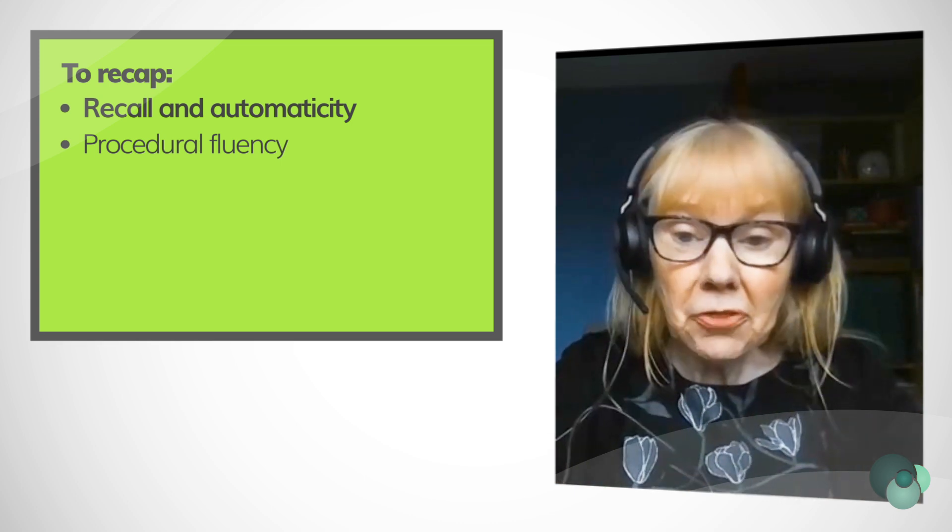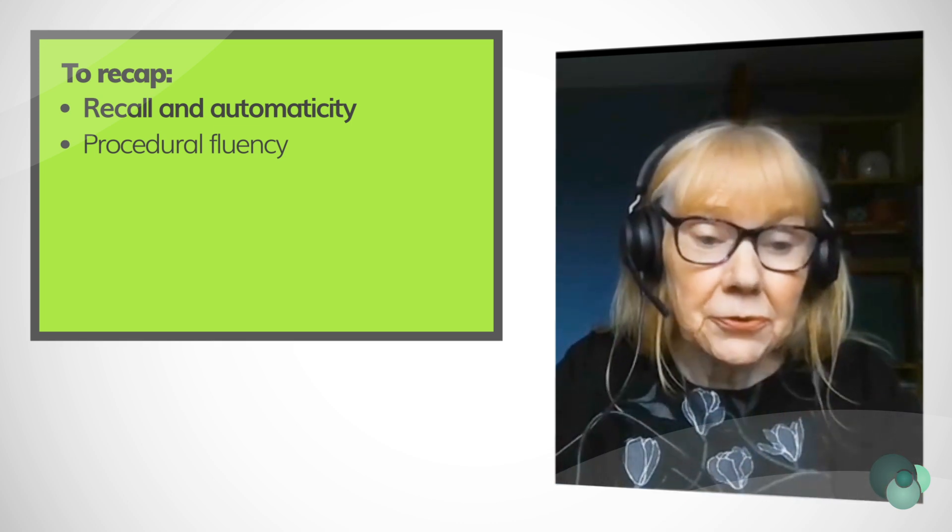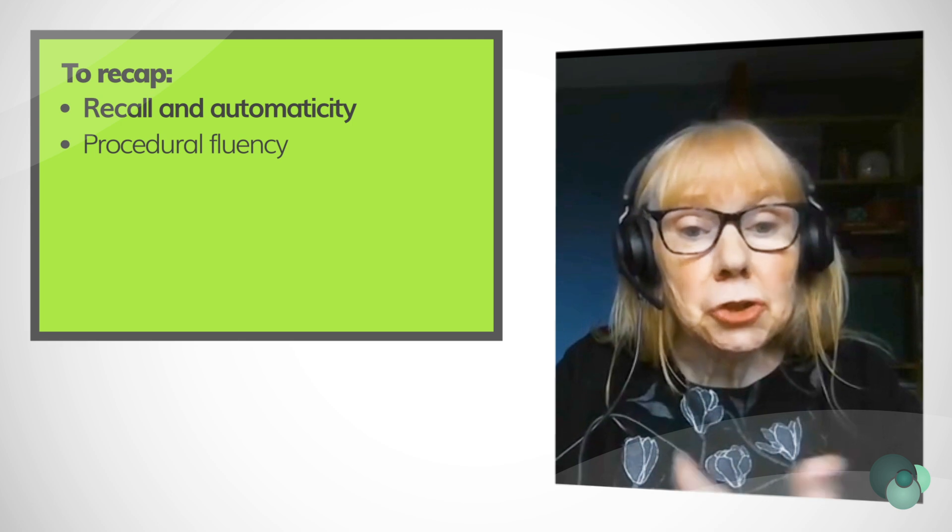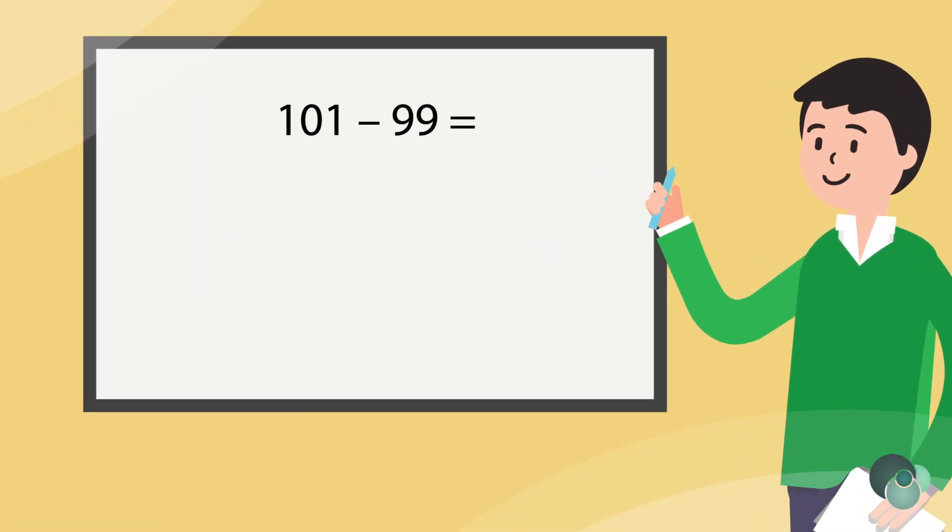Really important, there is also associated with procedural fluency the ability to choose an appropriate method. Some methods are more appropriate to some calculations than others. For example, if I was calculating 101 subtract 99, it's easier to think of that as finding the difference between 101 and 99, which is of course 2.